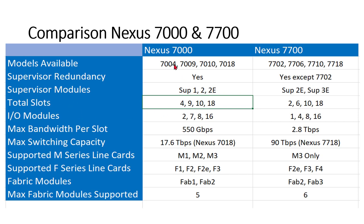Total slots are easy to calculate: the last number in the model name indicates total modules, so 7004 has four, 7009 has nine, and so on. Subtract the supervisor slots and the rest are input/output slots for data plane forwarding. Maximum bandwidth per slot: the best module can handle 550 Gbps, which is the highest or maximum bandwidth available for that chassis. For the 7700, it is 2.8 Tbps per slot — that is why these are high-performance devices.